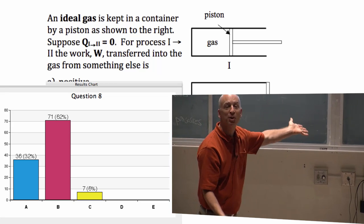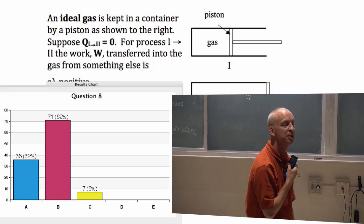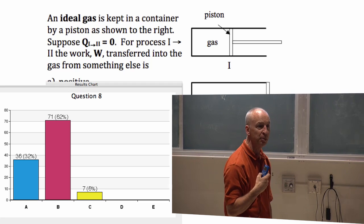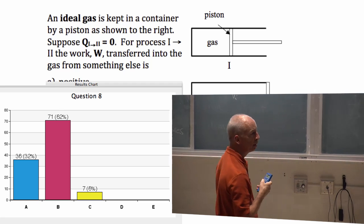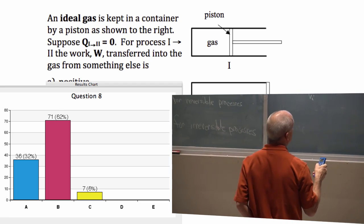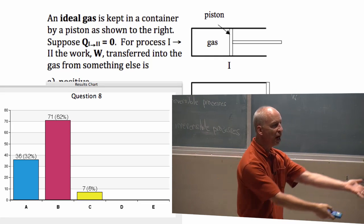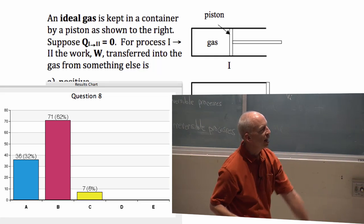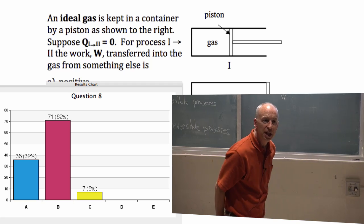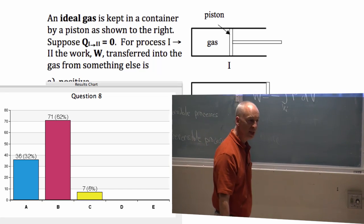So, the piston moves. That's how, you're right. The piston moves and the gas is the thing that moved it. This gas is pushing the piston to the right and the piston does move to the right and so that gas did work on something else.